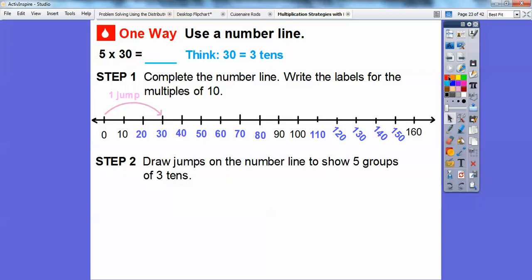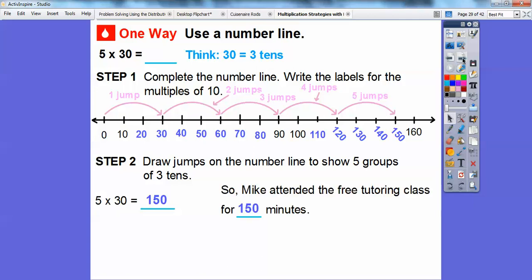So here's the second jump right there. That's going to take us to 60. Here's the third jump, so I'm just going by 3s. There's the fourth jump, there's the fifth jump. And so we get to 150 right there. So 5 times 30 is 150. So Mike attended the free tutoring class for 150 minutes.